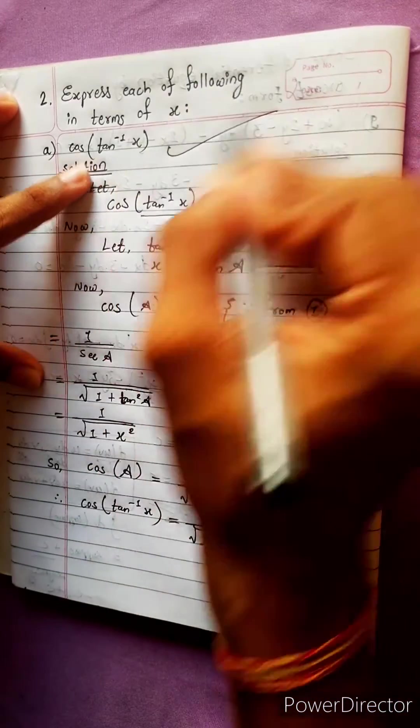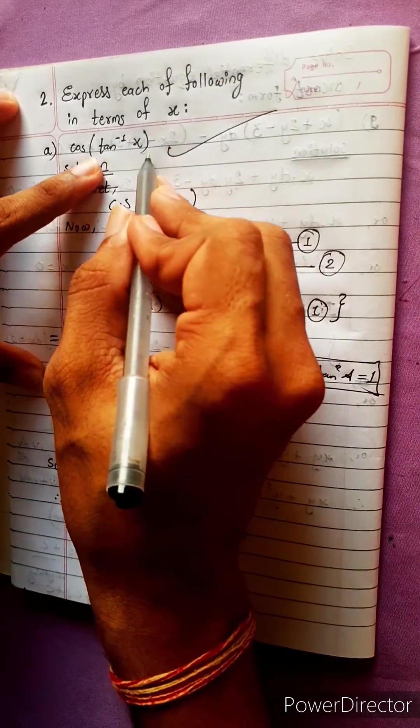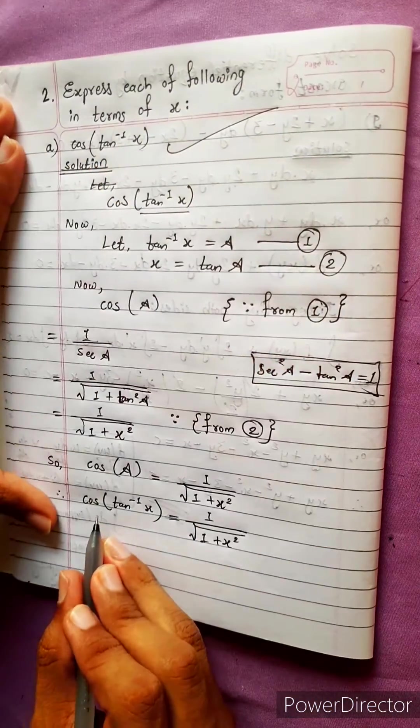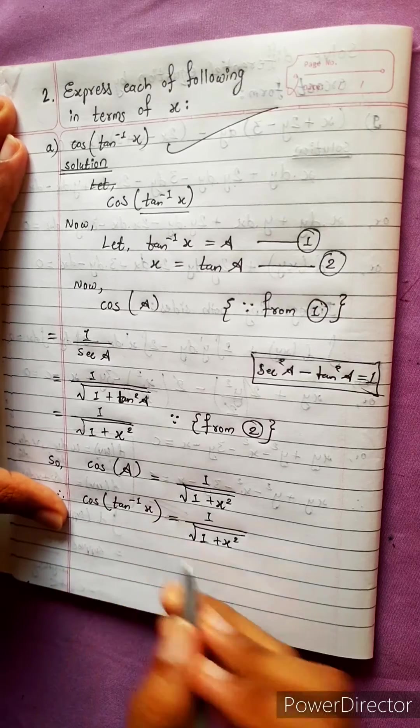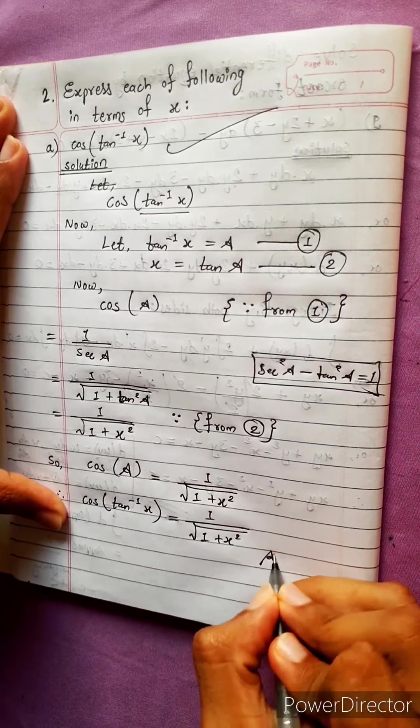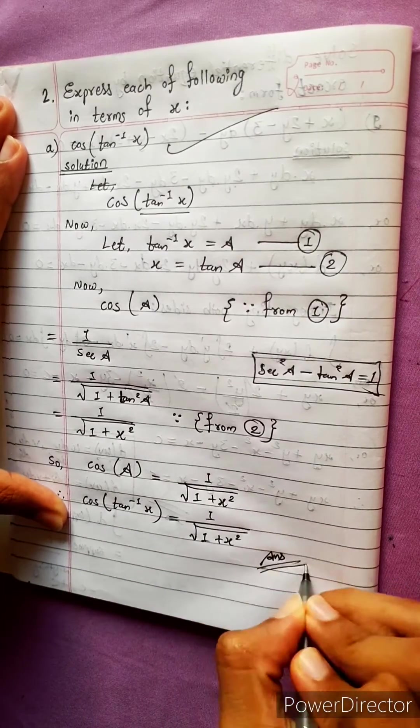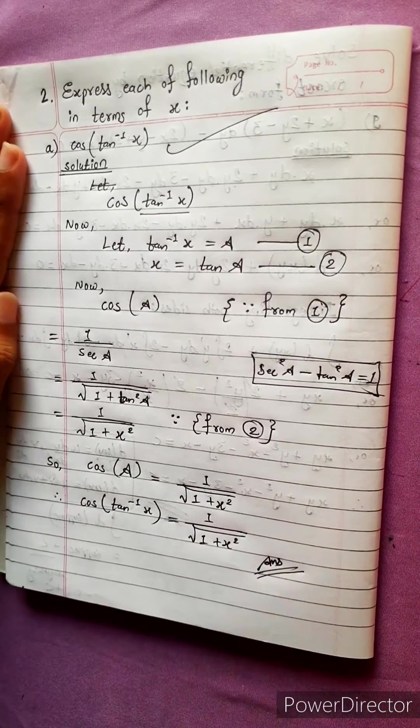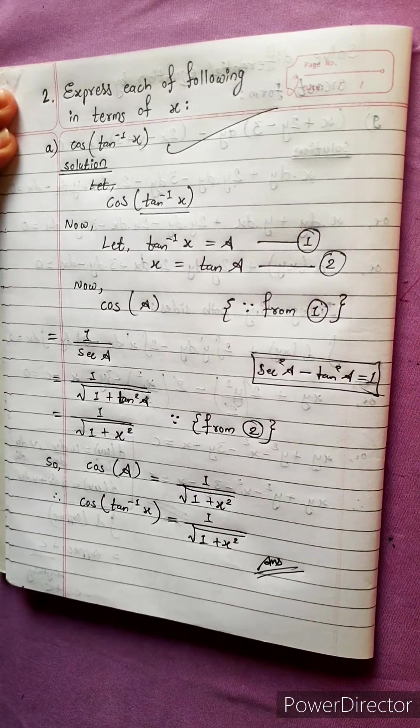The question was cos(tan inverse x). We found cos(tan inverse x), and our answer is in terms of x. Now be ready for the next question.